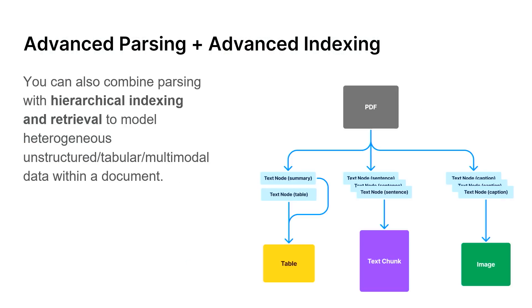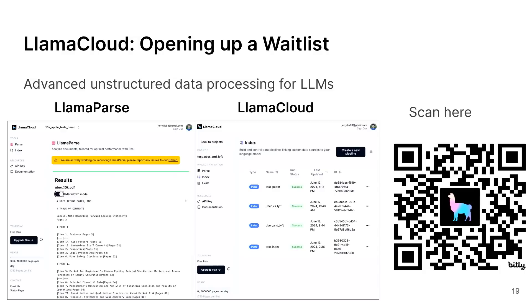So that's step one. You want good parsing, and you can combine this with advanced indexing modules to model heterogeneous data within a document. One announcement we're making today: we opened up LlamaParse a few months ago, it has tens of thousands of users, tens of millions of pages processed, and gotten very popular. If you're an enterprise developer that has a bucket of PDFs and wants to process them without worrying about all those decisions, come sign up — this is what we're building on the Llama Cloud side.